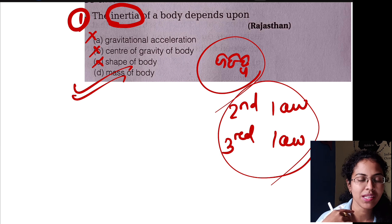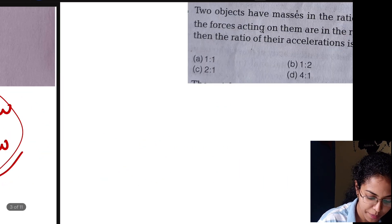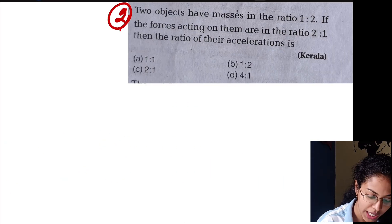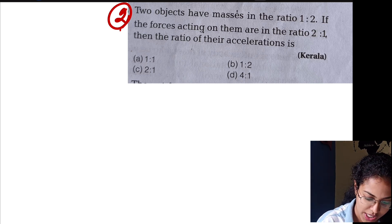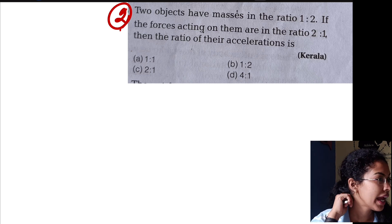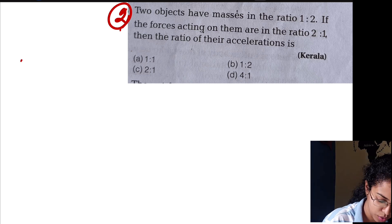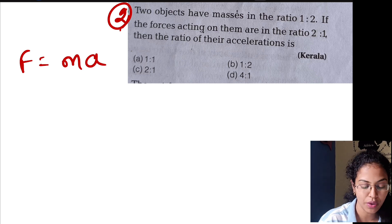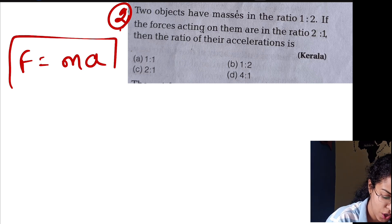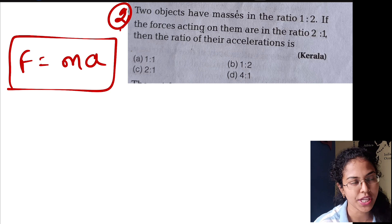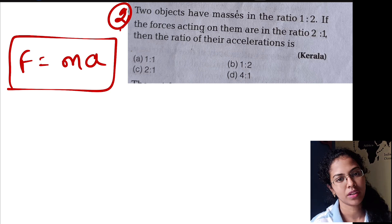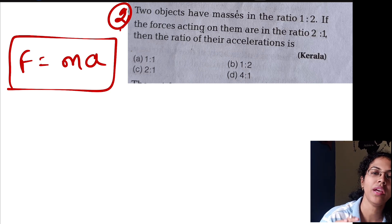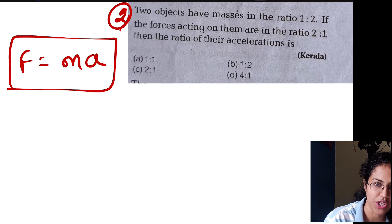Higher mass means higher inertia. Now the 2nd law: two bodies have masses in the ratio 1 is to 2. If the forces acting on them are in the ratio 2 is to 1, then the ratio of their accelerations — this is our second law. We know that force is equal to mass into acceleration. F = ma is the formula derived from the second law.